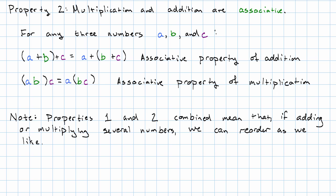Something to be aware of. Notice that properties one and two combine to mean that if we have a big list of numbers to add up, or a big list of numbers to multiply together, we can think of it as just adding up a big list, or multiplying a big list, and we can reorder them and do the addition in whatever order we like, or do the multiplication in whatever order we like. And that's sometimes going to make our life a little bit easier.